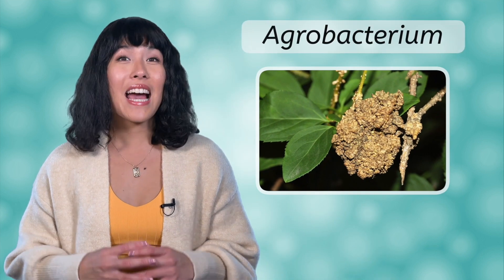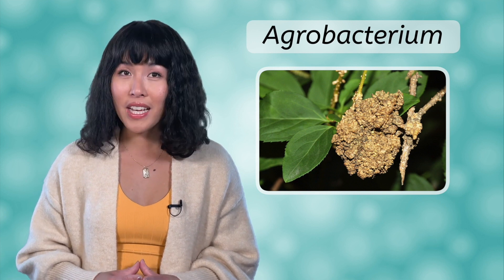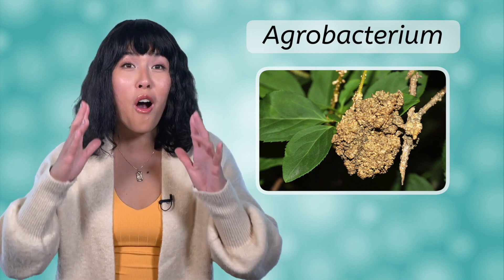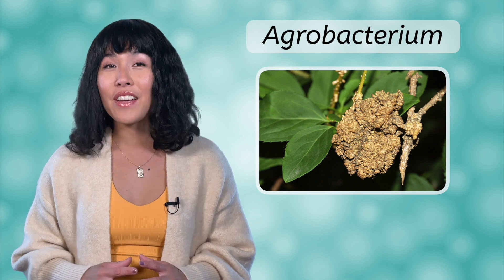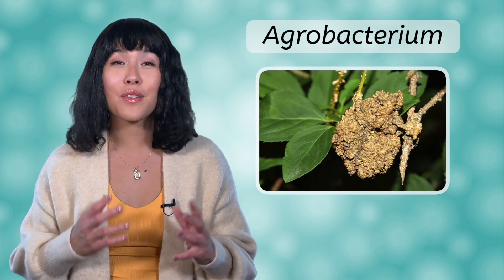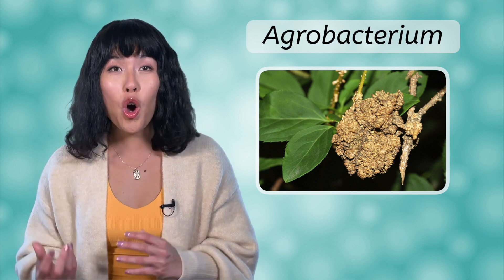Most bacteria are heterotrophs, meaning they must consume organic molecules made by other living things. This Agrobacterium grows on plants, causing tumors to form on the plants' stalks and giving the bacteria cells access to the plants' nutrients for their own needs.